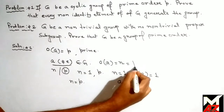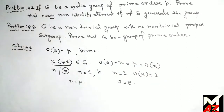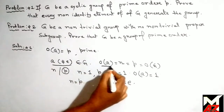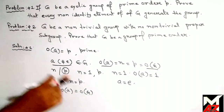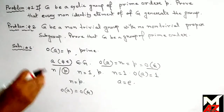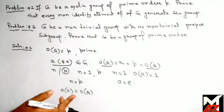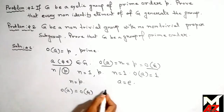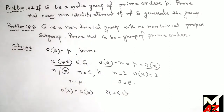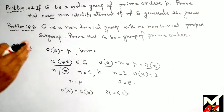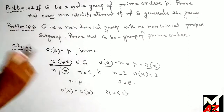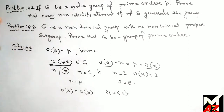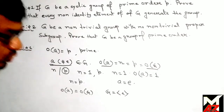Since n equals p, and p is also the order of G, we write: the order of a equals the order of G. That is, G has an element a whose order is the same as the order of the group. From the property of cyclic groups, we know that G is generated by a — that is, a is a generator of G. So every non-identity element belonging to G also generates the group G. Problem one is solved.